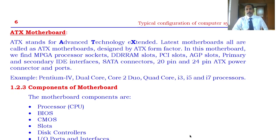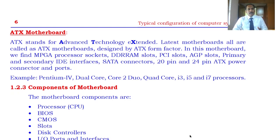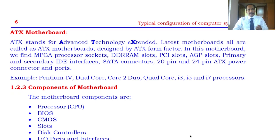If you have an ATX motherboard, you can upgrade your computers — your processor can be changed from Pentium 3 or a core processor to i3, i5, or i7, as long as it supports the ATX motherboard with MPGA — Multi-Pin Grid Array. It also contains DDR RAM slots, PCI, and AGP slots. This is a summary of the different types of motherboard: XT, AT, Baby AT, and ATX.